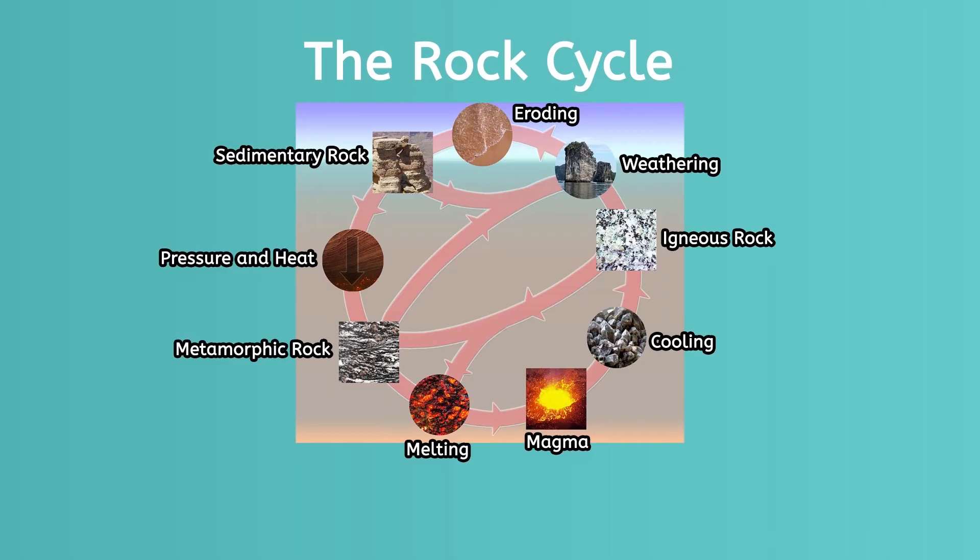In the rock cycle, igneous rock becomes sedimentary or metamorphic rock. Sedimentary rock can become igneous or metamorphic. And metamorphic rock can become igneous or sedimentary. Sounds kind of rocky, but it's not. In one way or another, rocks are related to each other, and the rock cycle proves it.